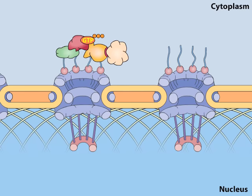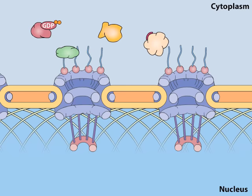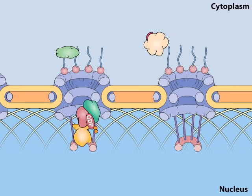Following transport to the cytosolic side of the nuclear envelope, GTP hydrolysis and release of RAN-GDP leads to dissociation of the cargo protein, which is released into the cytoplasm. Exportins are then recycled through the nuclear pore complex for reuse.